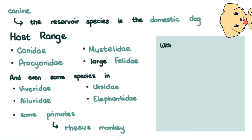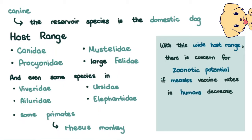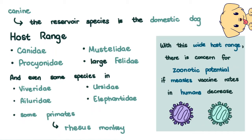With its wide host range, there is concern for zoonotic potential if measles vaccine rates in humans decrease, measles being another Morbillivirus closely related to the canine distemper virus.